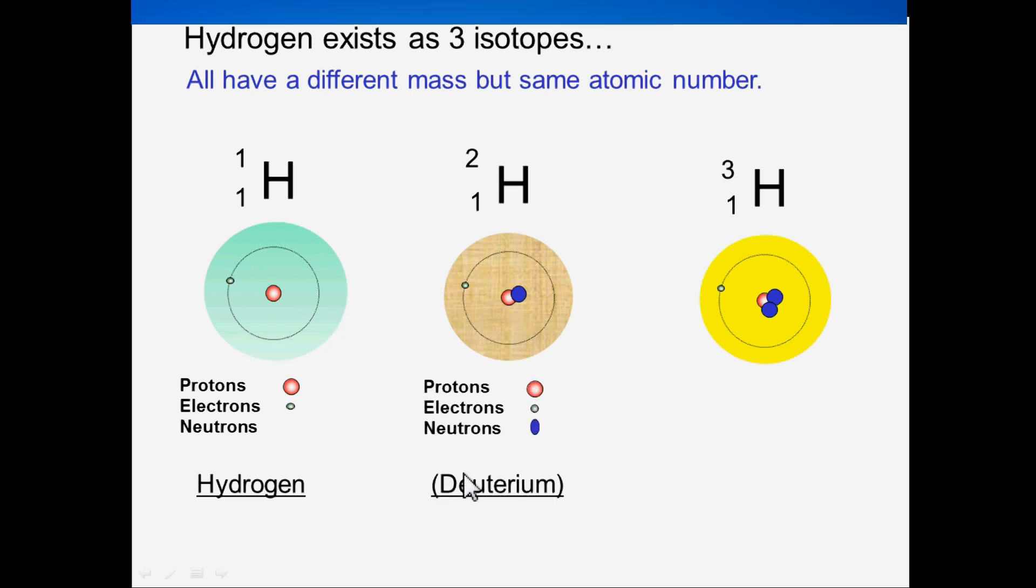The second one is deuterium. It has one proton, one electron, and one neutron.